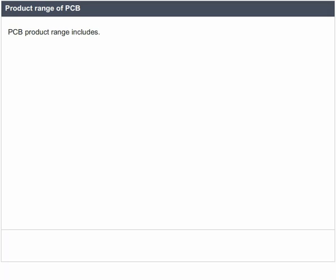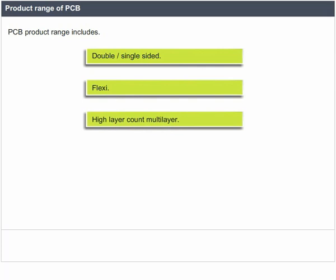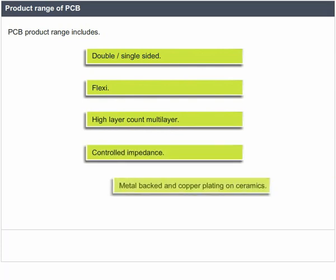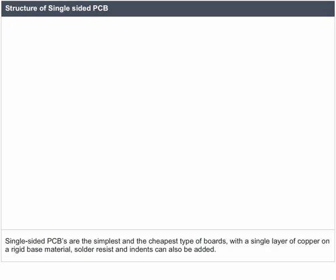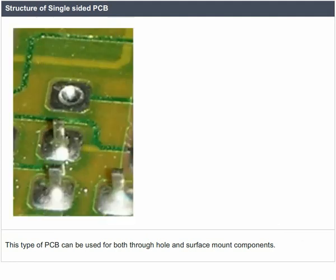Product range of PCB includes: single-sided, double-sided, flexi, higher layer count multi-layer, controlled impedance, metal backed, and copper plating on ceramics. Structure of single-sided PCBs: single-sided PCBs are the simplest and cheapest type, with a single layer of copper on a rigid base material. Solder resist and indents can also be added. This type of PCB can be used for both through-hole and surface mount components.